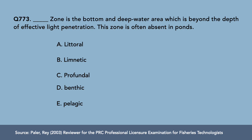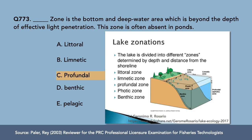Question 3: The blank zone is the bottom and deep water area beyond the depth of effective light penetration; this zone is often absent in ponds. A) littoral, B) limnetic, C) profundal, D) benthic, E) pelagic. The correct answer is letter C, profundal zone. This refers to the different lake zonations — littoral, limnetic, profundal, photic, and benthic. The profundal zone is in the aphotic region, absent in ponds because ponds are shallow.